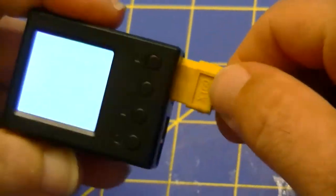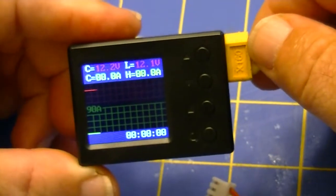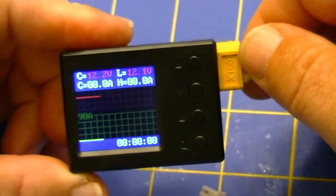Amperage detection is the feature that makes this device more than just an overpriced LiPo cell checker. As it says, for this function I must connect the battery via the XT60 connectors.